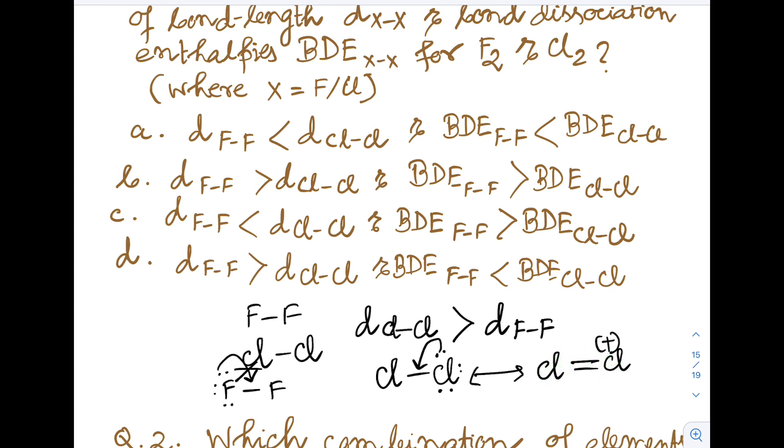As the Cl-Cl bond is getting partial double bond character, its bond dissociation energy will be higher. So bond length of Cl-Cl bond is higher than F-F bond, and bond dissociation energy of Cl-Cl bond will be higher than F-F bond. Option A is the correct answer.